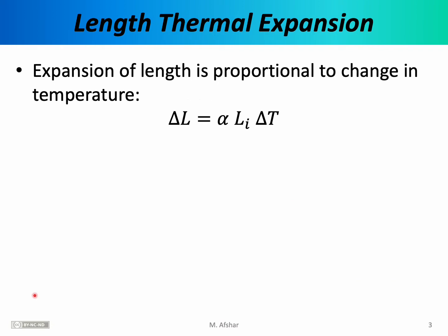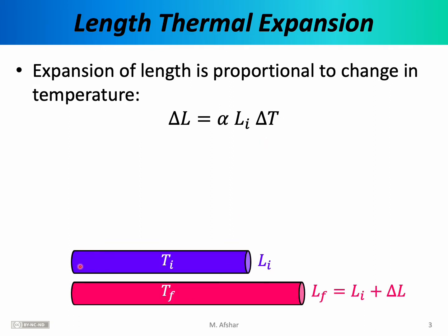Of course, we want to understand thermal expansion on a quantitative level. More precisely, we want to be able to calculate the change in the length of an object in response to a change in its temperature. To do that, suppose we have an object, let's say a rod, at some initial temperature T sub i. Let's say the initial length of the rod is L sub i. We now heat this rod and raise its temperature to some final temperature which we'll call T sub f. At that final temperature, the rod will have some final length L sub f, and L sub f will be greater than L sub i by some amount which we're calling delta L. So in the picture here, delta L is essentially this distance here.